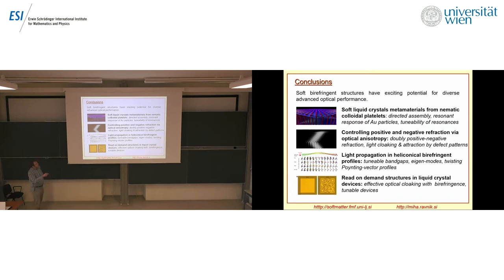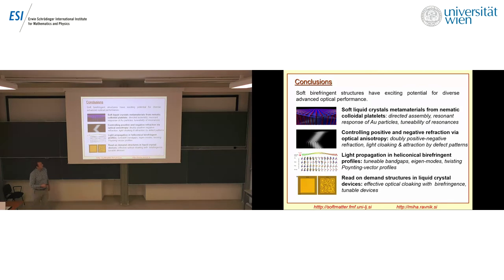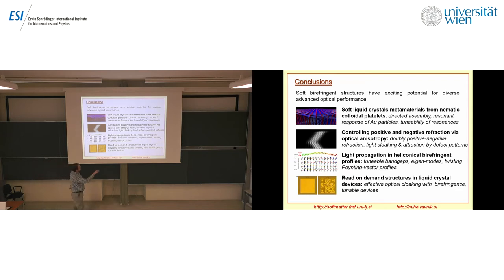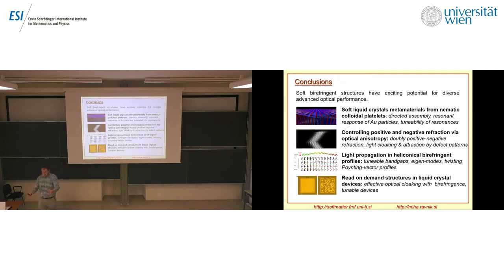I tried to show you today four lines of work on how liquid crystals can be used as optical materials. First, using colloidal objects as metamaterials at sub-wavelength scales to study resonant behavior. Second, what happens if you design a liquid crystal pattern where one of the eigenindices is negative. Third, light propagation in heliconical birefringent profiles and the tunability of the photonic crystal response. And fourth, cloaking of micro-objects by matching the surrounding birefringence with the birefringence of the micro-objects. Thank you.